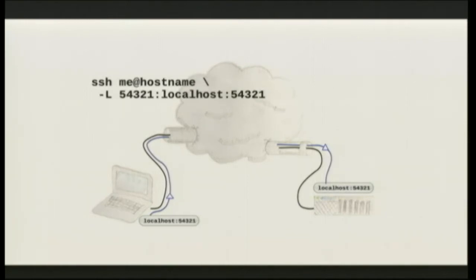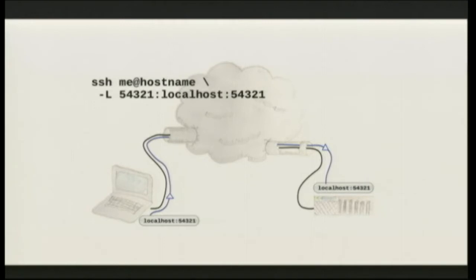On the other end, the SSH daemon is acting as a server for my SSH connection, but now it's also acting as a client. When traffic comes in on that forwarded port, it's opening a connection to the specified address and sending everything through. The service I'm connecting to on the other end doesn't see a connection from my local machine — it sees a connection coming from the SSH process. So if I'm connecting to something running on localhost, it sees a local process connecting to a service on that port. As far as both ends of that tunnel are concerned, this is all local traffic. It's completely transparent to the clients.